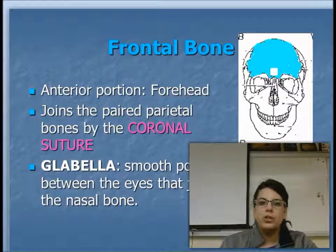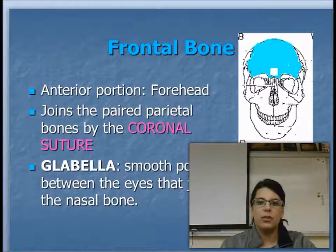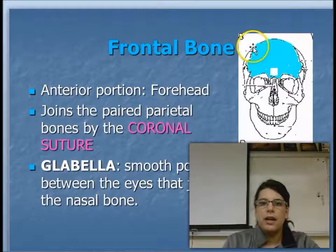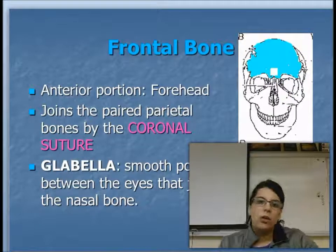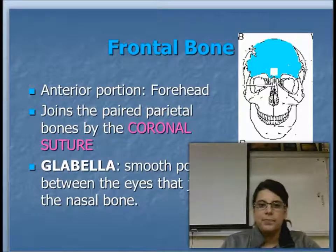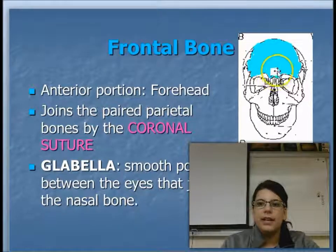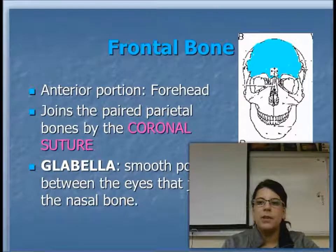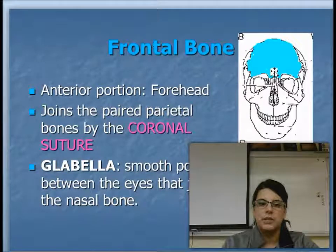The frontal bone is going to be joined by the two parietal bones by the coronal suture. If you think of coronal suture, it's going to be right around the top — think of 'coronal crown,' that's where a crown would kind of sit. The glabella is the very smooth portion of the frontal bone that occurs right between your eyes. It's going to be right where your frontal bone connects to the nasal bones.